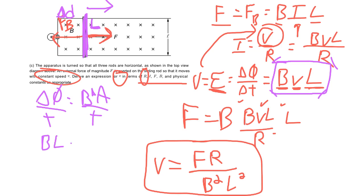...B L delta d over t. But what is delta d over t? Well that's velocity, right? So we're left with BLV.